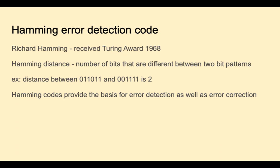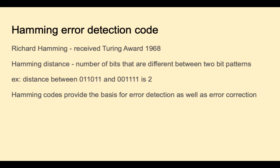In the next few slides, we'll look at an implementation of a Hamming error detection and correction code. This is named in honor of Richard Hamming, who received the ACM Turing Award in 1968. Like a lot of ideas in computer science, this is inspired by the field of information theory developed by Claude Shannon and others. The Hamming error detection code relies on what came to be called the Hamming distance — the number of bits that are different between two bit patterns. For example, the distance between two bit patterns might be two. The nice thing about the Hamming code is that it can not only detect an error, but correct it as well.